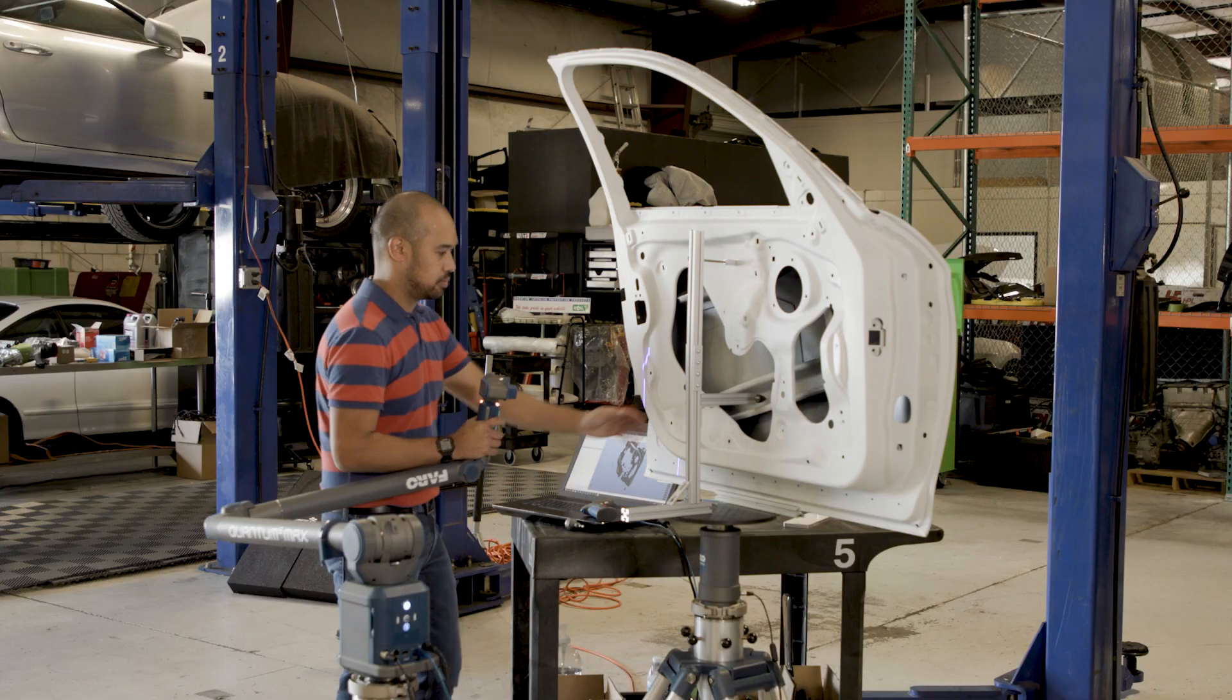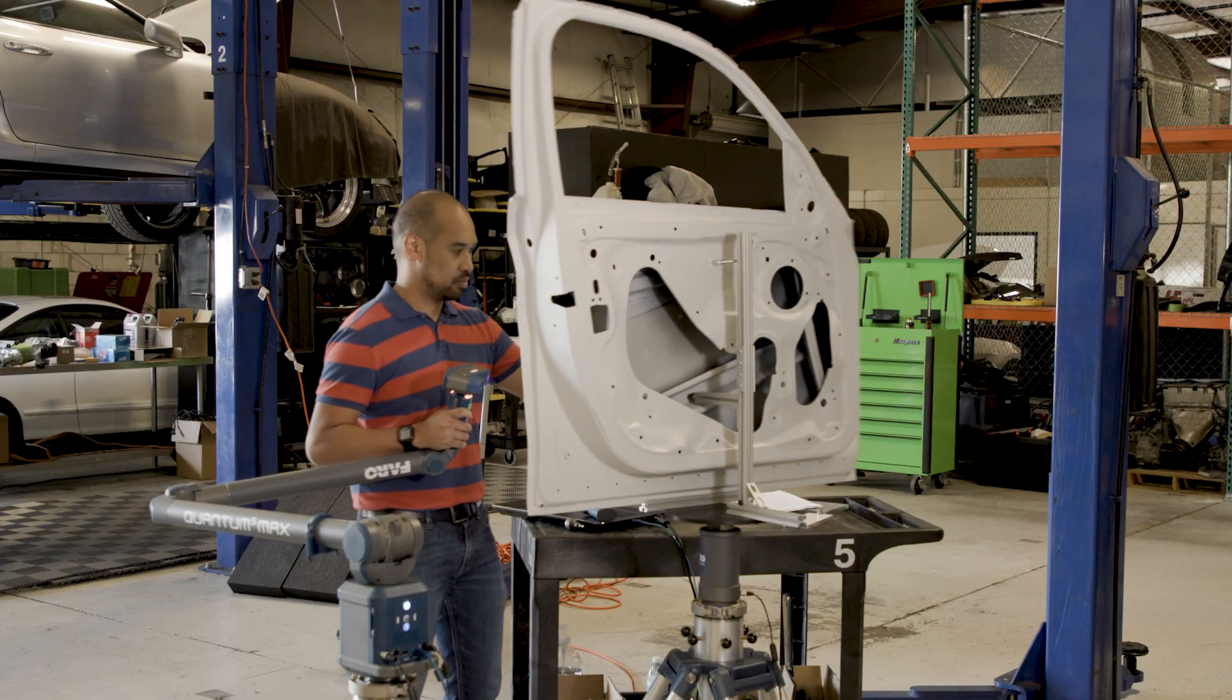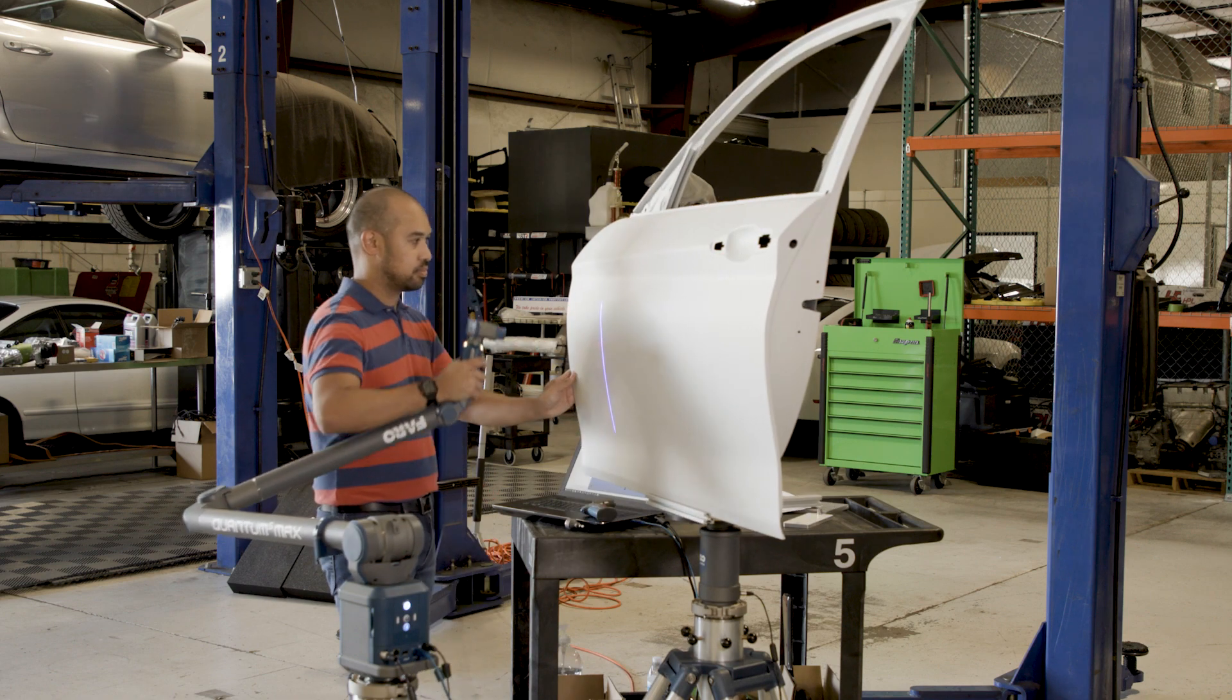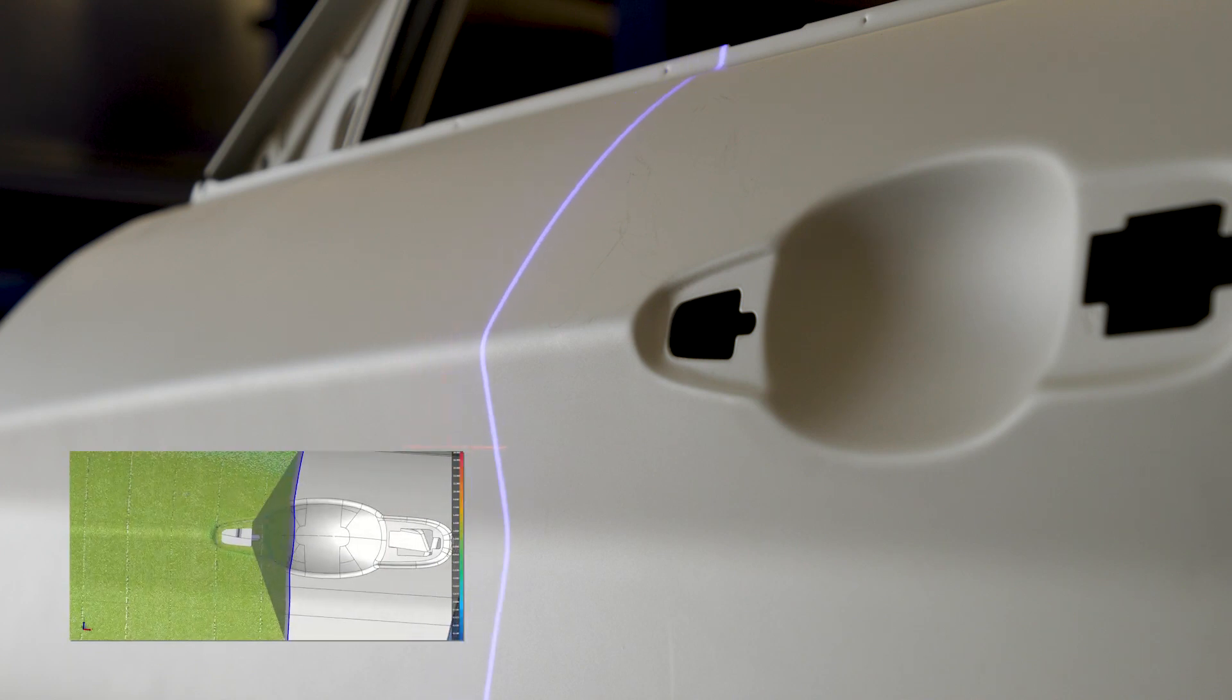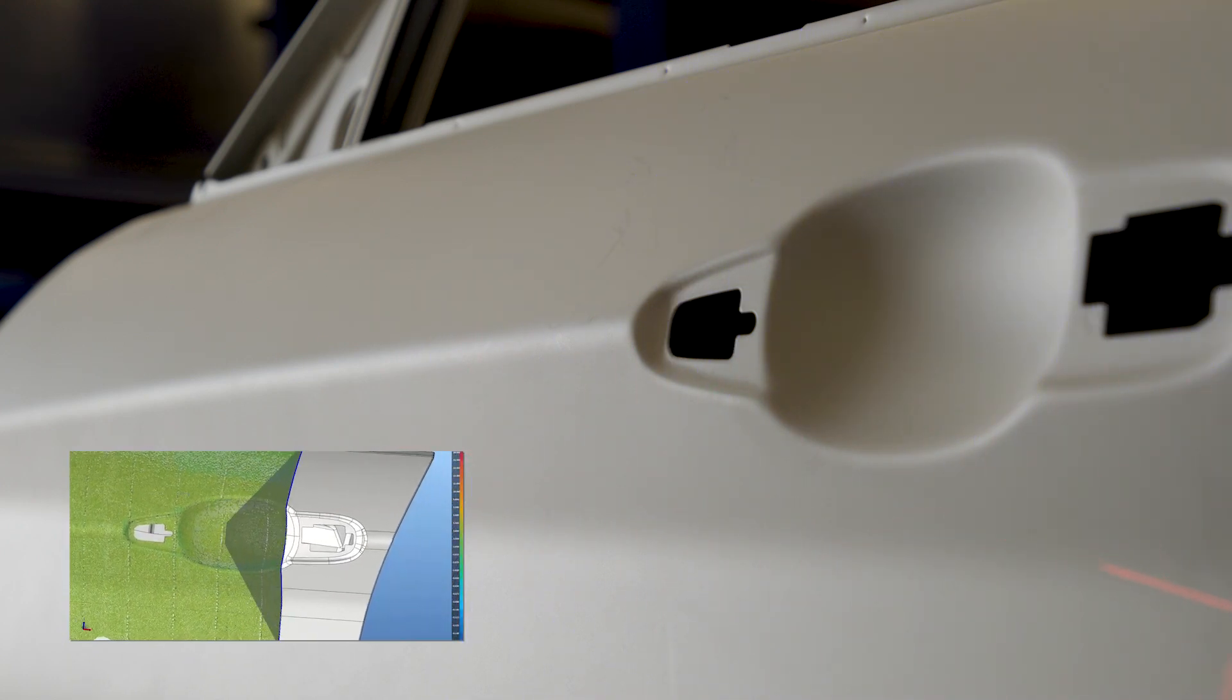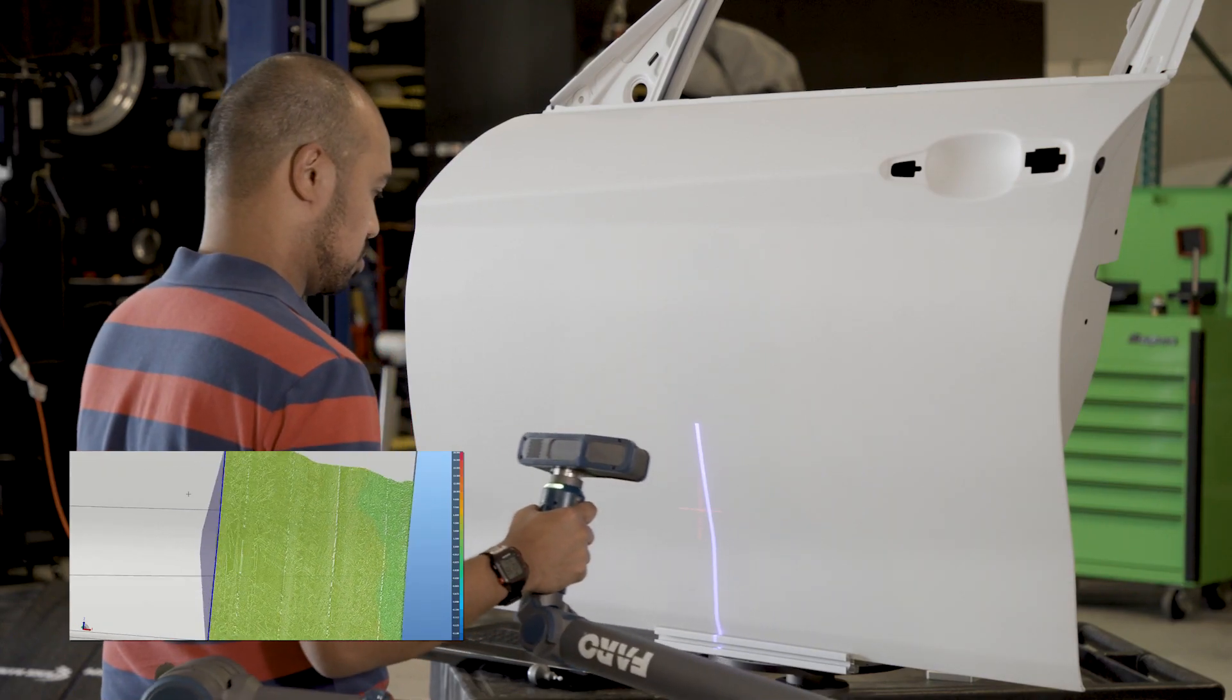For quickly scanning large parts or expansive surface areas, the XS LLP's extra-wide laser stripe delivers increased coverage per pass, collecting data in half the time for faster results and higher productivity.